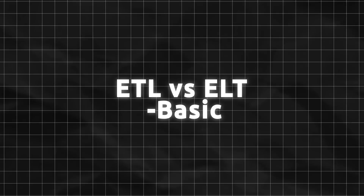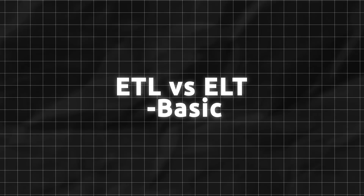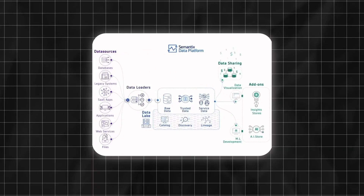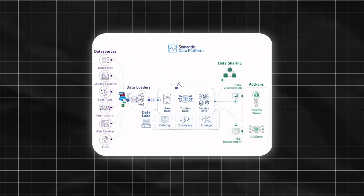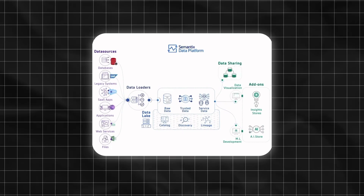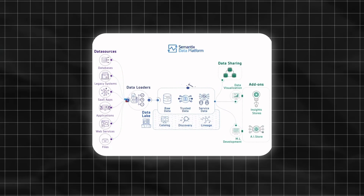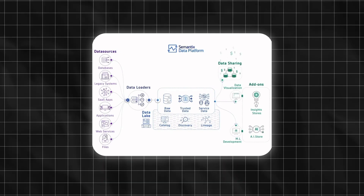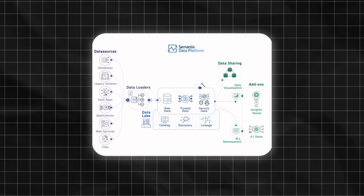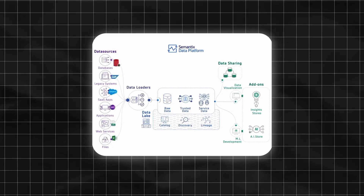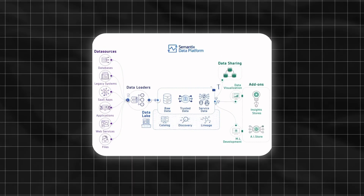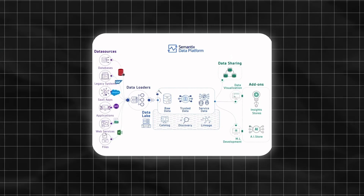Explain ETL versus ELT. ETL is the process of extraction of data from source systems, then doing some transformations and finally loading the data into a data warehouse. ELT leverages the separation of storage and compute - it became economical to store data and then transform it as required. All data is immediately loaded into the target system, and only then data is transformed in the target system to be analyzed by data analytics tools.